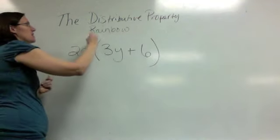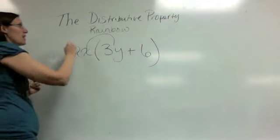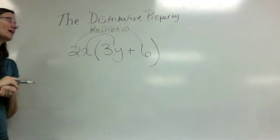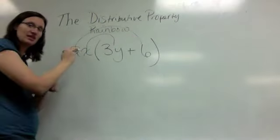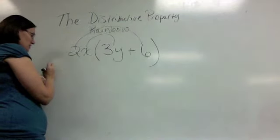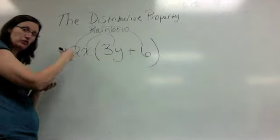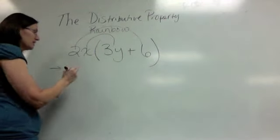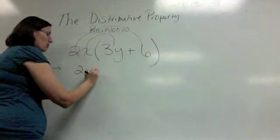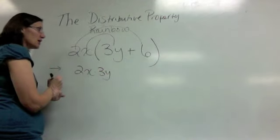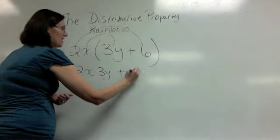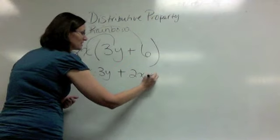This means we want to take 2x times 3y and 2x times 6. So this step here is for those who maybe want to write this out and see it. I did it on the last problem. If you can do the multiplication, great, go ahead. But some of us need to write out what we're doing. We are taking 2x times 3y and 2x times 6.